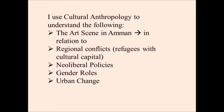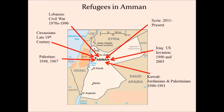I tried to construct a map of refugees in Amman. The first group is the Sharkas, the Circassians, who came in the late 19th century and are known as the ones who first settled Amman. Then, of course, the influx of Palestinian refugees after 1948 and after 1967, where thousands of them came to Jordan, with the large majority living in cities, mostly in Amman and around it. Then from the 1970s to 1990s, it's the civil war in Lebanon.